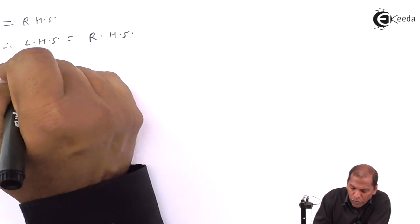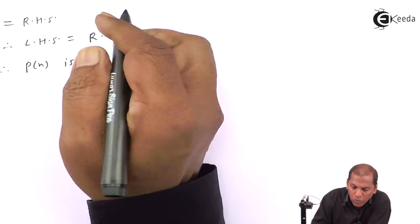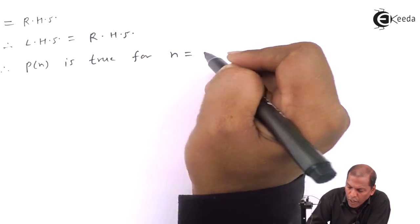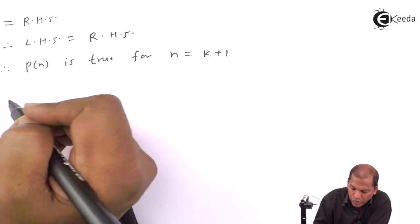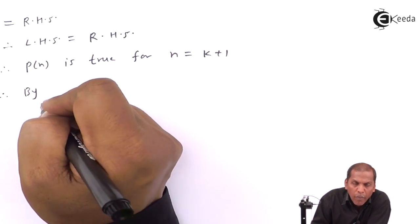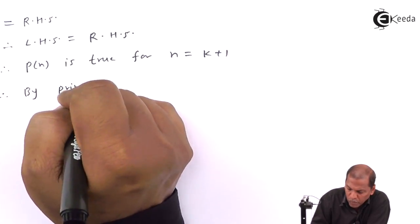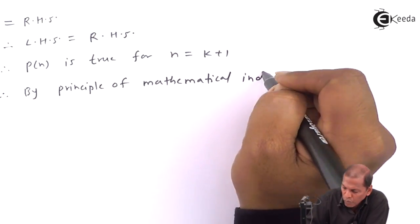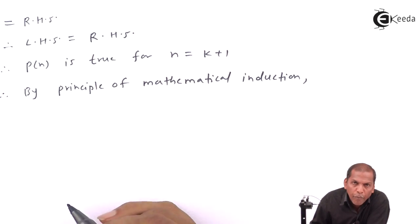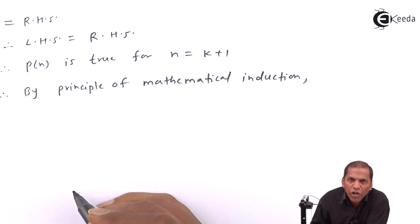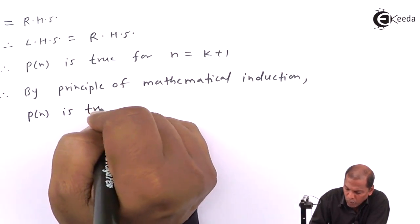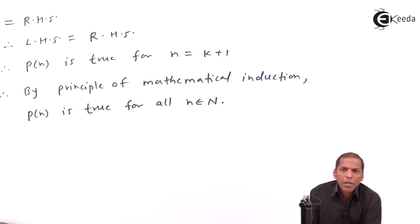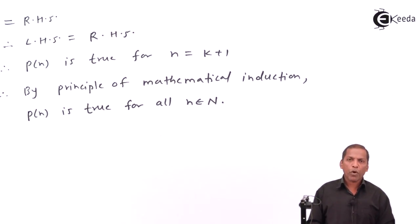Therefore, P(n) is true for n equal to k plus 1. And therefore, by the principle of mathematical induction, P(n) is true for all natural numbers. This is the required solution for the given problem. Thank you.